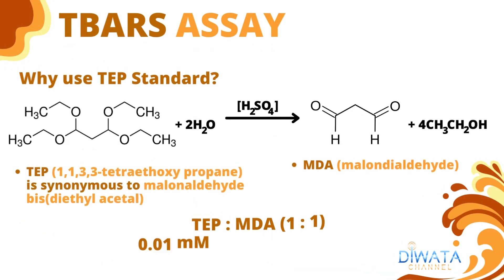So why TEP? TEP, or 1,1,3,3-tetraethoxypropane, is sometimes referred to as malonaldehyde-based diethylacetal. In an acidic condition, TEP is hydrolyzed and malonaldehyde is liberated. Thus, its methyl analog, DMP, or 1,1,3,3-tetramethoxypropane, can also be used in the construction of a TBARS standard curve. Using the 1:1 mole ratio of TEP and MDA product, it shows that 0.01 millimolar TEP standard solution gives an equivalent of 0.01 millimolar MDA concentration.